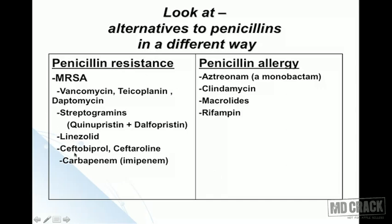The left-hand side of the column shows penicillin resistance. For example, if there is MRSA, we think of vancomycin, teicoplanin, and daptomycin, or streptogrammins (quinupristin and dalfopristin), or linezolid, or the newer fifth-generation cephalosporins like ceftobiprole and ceftaroline. Carbapenems are also included to complete the list of other beta-lactam antibiotics.